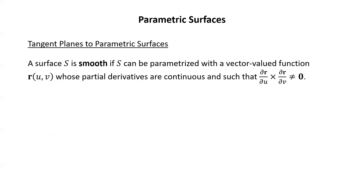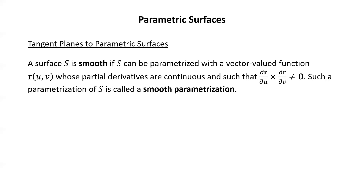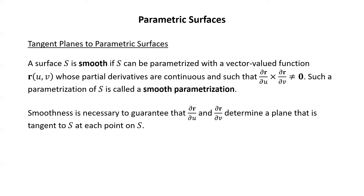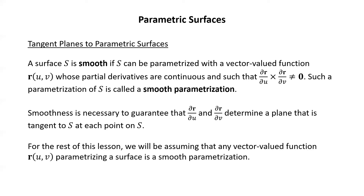Tangent planes to parametric surfaces. A surface S is said to be smooth if S can be parametrized with a vector-valued function r of uv whose partial derivatives are continuous and such that the cross product of the partial derivatives is never zero. Such a parametrization is called a smooth parametrization. Smoothness is necessary to guarantee that the partials of r with respect to u and v determine a plane tangent to S at each point. For the rest of this lesson, we will assume any parametrization is smooth.